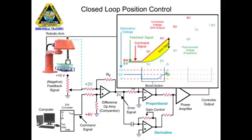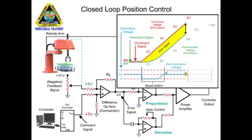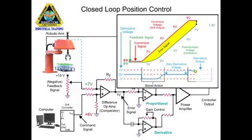As the command signal stops changing, the robotic arm continues to move with a decreasing error signal. As the error is reduced, the derivative amplifier output voltage changes polarity and cancels the proportional voltage. If the error signal decreases too fast, the derivative voltage will be greater than the proportional voltage. When this occurs, the polarity of the power amp is reversed, creating a brake condition to prevent overshooting the desired position.